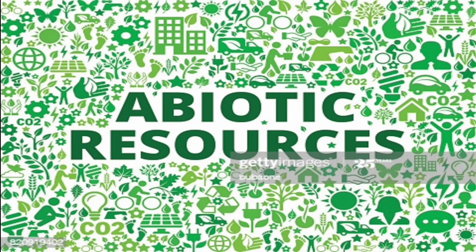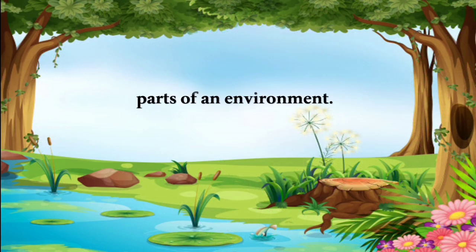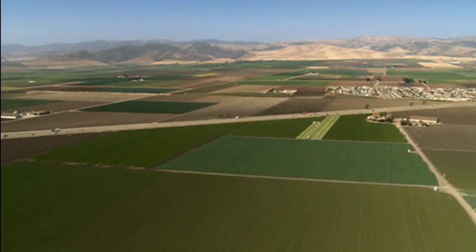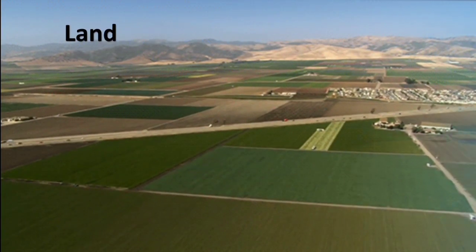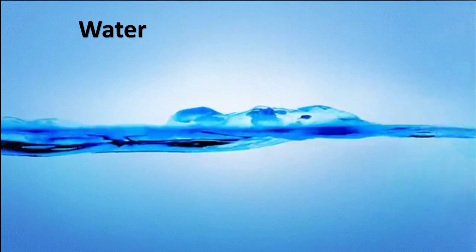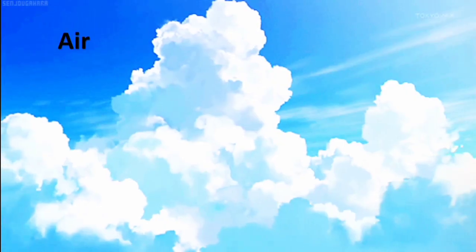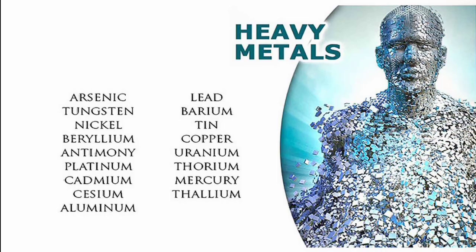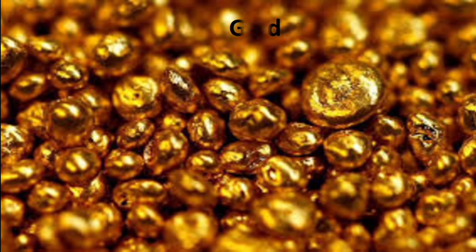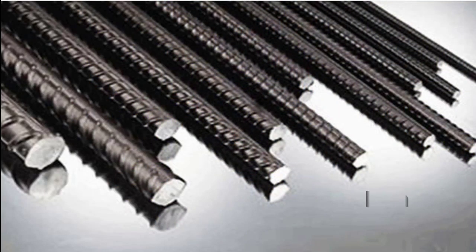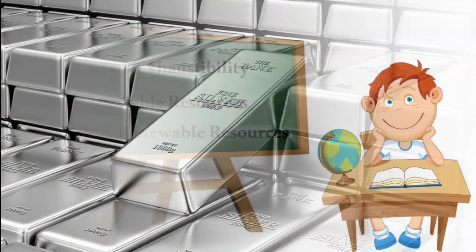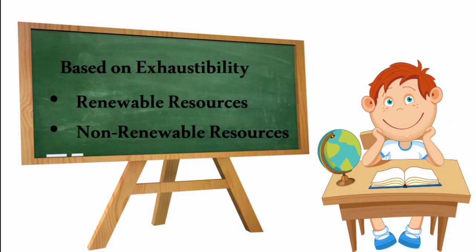Abiotic resources are the non-living parts of the environment — for example, land, water, air, sunlight, and heavy metals such as gold, iron, copper and silver.